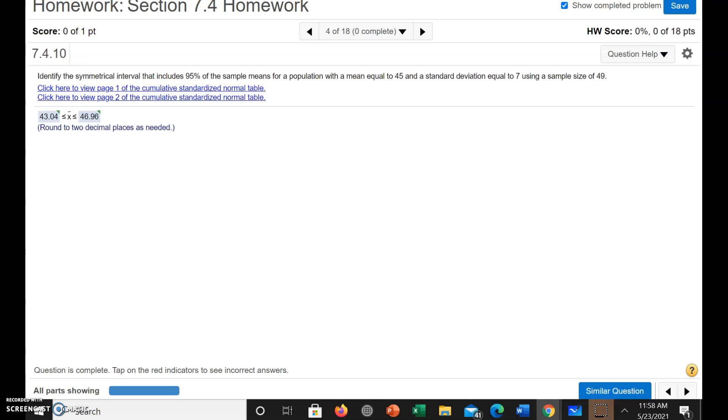Identify the symmetrical interval that includes 95% of the sample means for a population with a mean equal to 45 and a standard deviation equal to 7 using a sample size of 49.